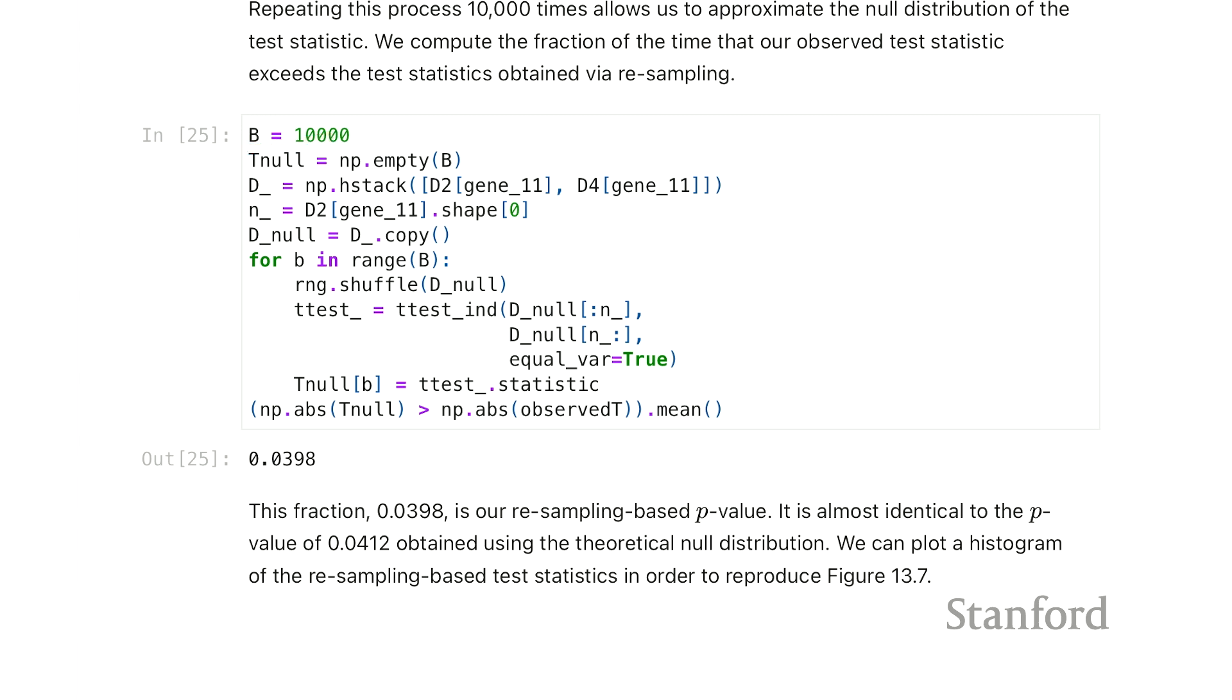What we're going to do is we're going to keep the earlier we had the first number of observations were in group two and the remaining were in group four, but we're going to reshuffle the response before running the t-test function.